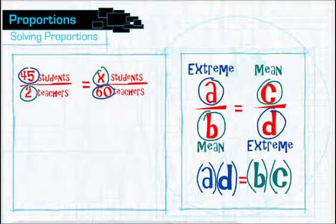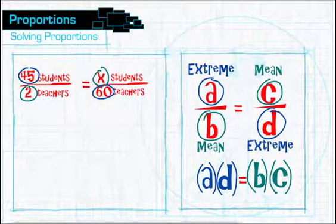The first step in solving a proportion is to cross multiply. In our case, we would multiply the means, two times X, and multiply the extremes, 45 times 60.